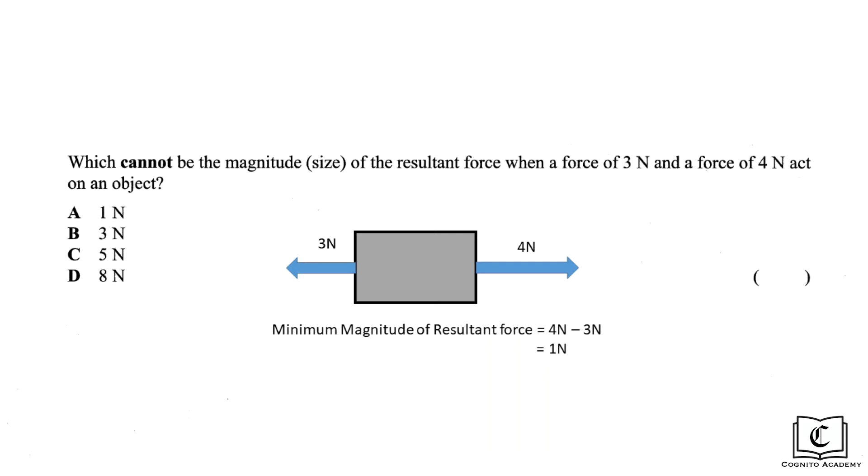So in this case, the difference between 4 newtons and 3 newtons, which is 1 newton. This means that any resultant force that is less than 1 newton is impossible. But in our options, we don't have any force with magnitude less than 1 newton.